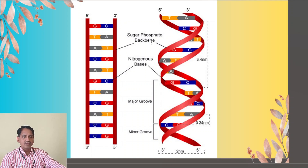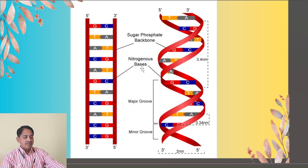The first is the phosphate group, which forms the backbone. The second is sugar — that is the deoxyribose sugar. And the third is nitrogenous bases. The nitrogenous bases are of four types: A, T, G, C — A stands for adenine, T stands for thymine, G stands for guanine, and C stands for cytosine. These nitrogenous bases are arranged such that A will always pair with T, and G will always pair with C.